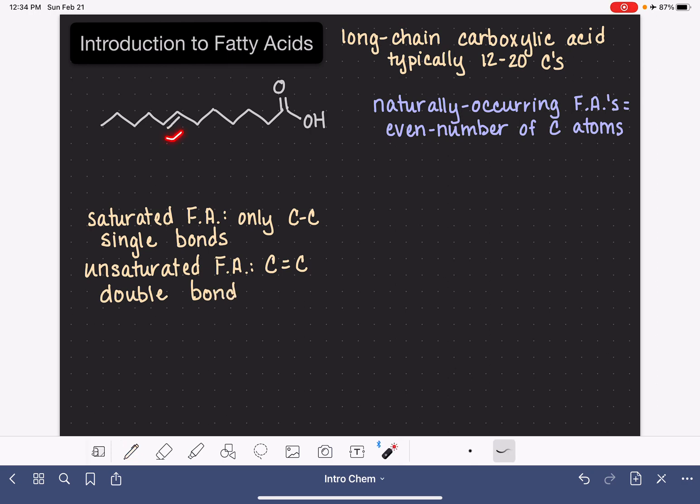The stereochemistry around these carbon-carbon double bonds is the same as any type of alkene. For example, the orientation around this carbon-carbon double bond could be trans, as it is being shown here, or it also could be cis. Naturally occurring fatty acids usually have cis bonds.